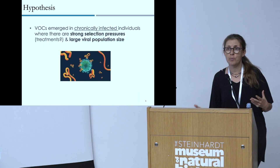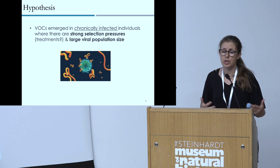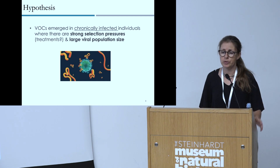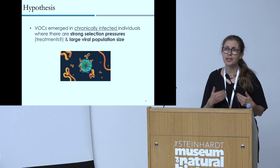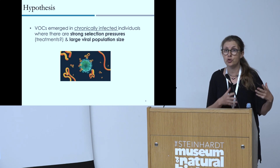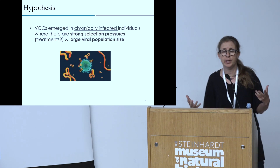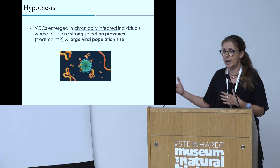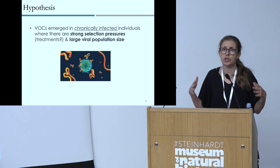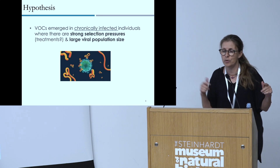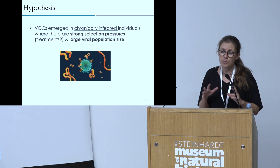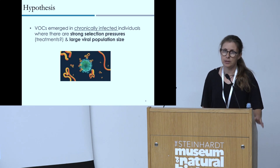The hypothesis that arose when the Alpha variant first emerged is that these variants of concern — which I abbreviate as VOCs — emerged in chronically infected individuals where there are strong selection pressures, possibly due to treatments. These patients are treated either with monoclonal antibodies, plasma from convalescent patients, or because of their own partially functioning immune systems. This is also related to the large viral population sizes in these individuals, which I'll elaborate on in a moment.